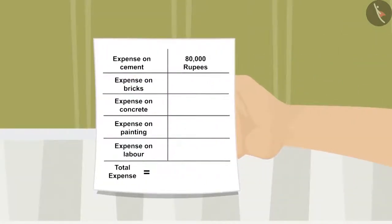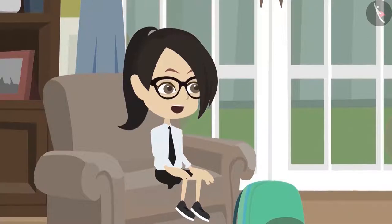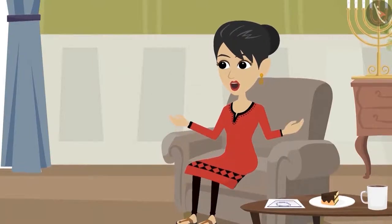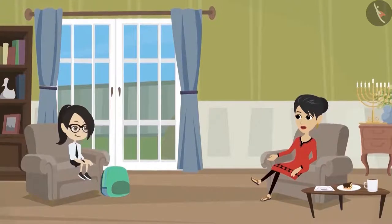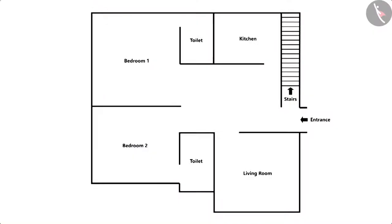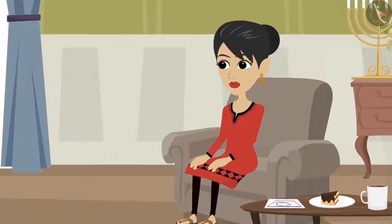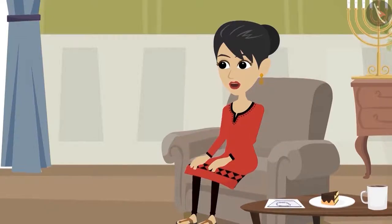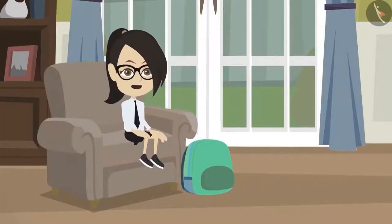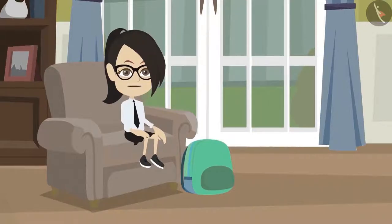The mother says, 'That's good, Vandana. Calculate the expenses associated with the bricks. I will calculate the rest.' Vandana wants to know how many bricks will be needed. The mother explains it is not easy to find out, but since they are building just above the current floor, the number of bricks required will be more or less the same. 22,600 bricks were used to build this floor, so Vandana should calculate the expenses for 22,600 bricks.